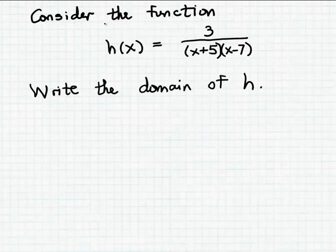Okay, in this problem we're going to consider the function h that's represented by this formula: 3 over (x plus 5) times (x minus 7), and we want to write the domain of h.